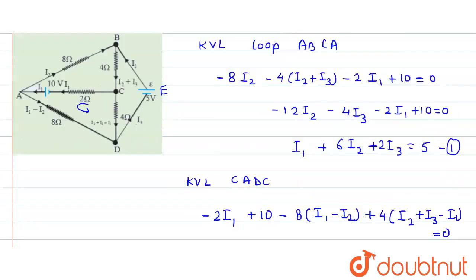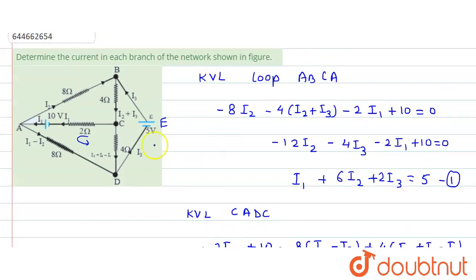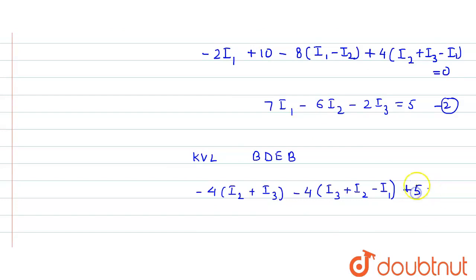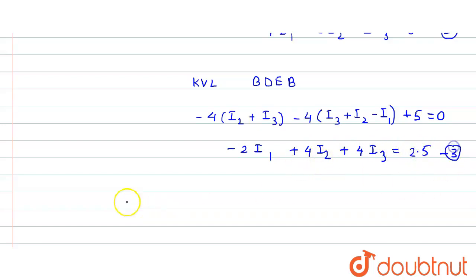Also moving in the direction of current, potential is dropped: minus 4·(i3 + i2 - i1). Moving from negative to positive, we gain a potential of 5 volts: plus 5. Net equals zero. Solving gives: minus 2·i1 + 4·i2 + 4·i3 = 2.5. This is Equation 3.